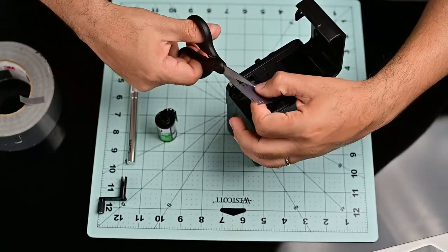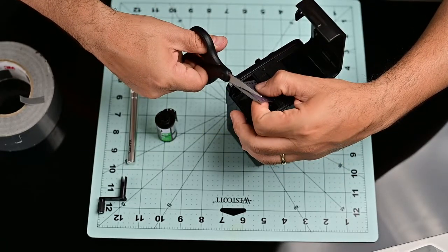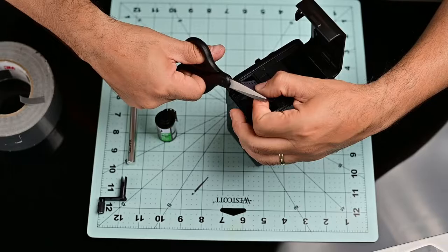Now we need to make sure that the film in the bulk loader is cut straight before we tape those pieces together.